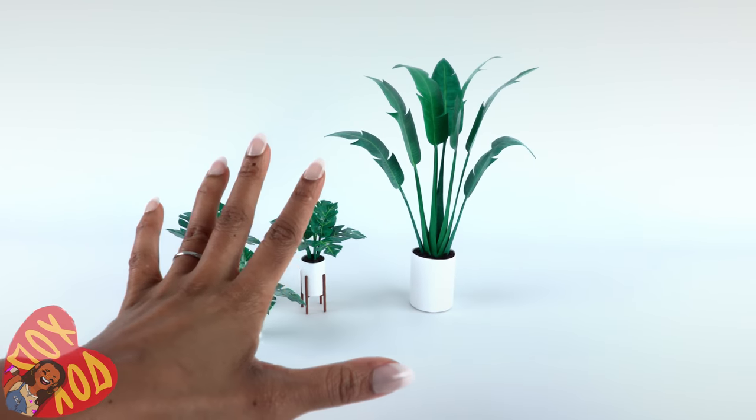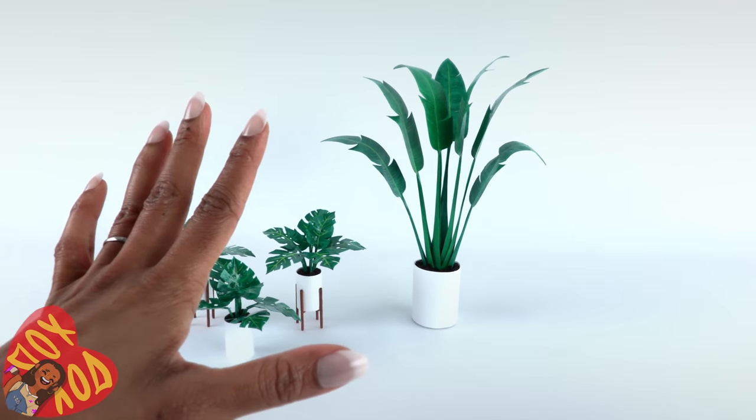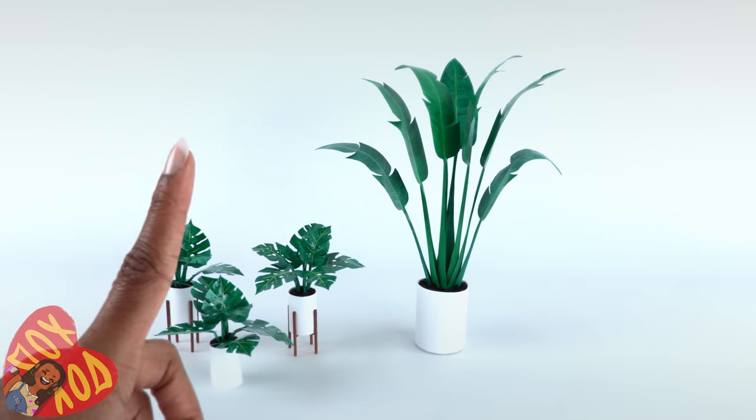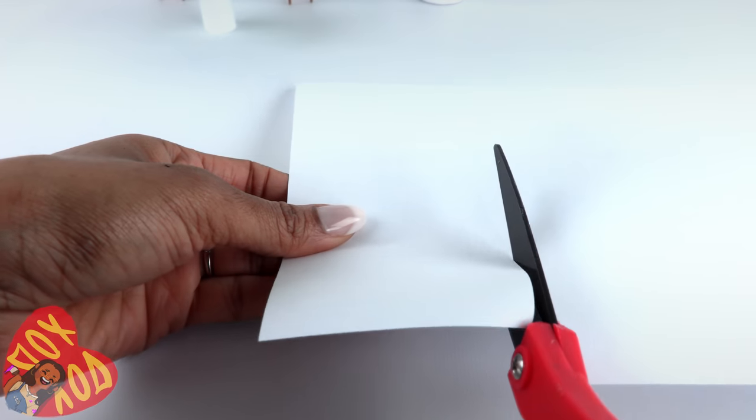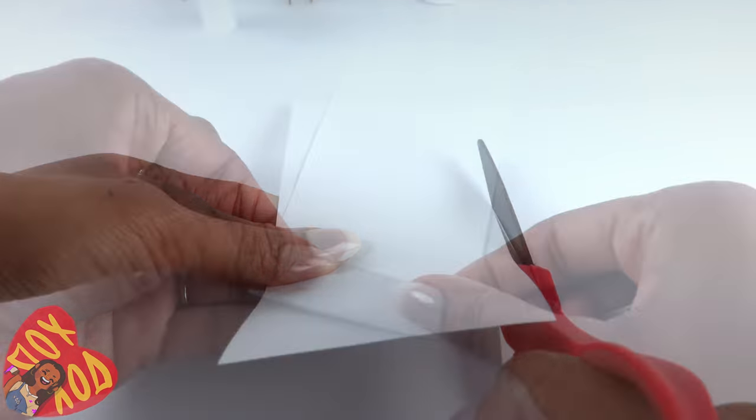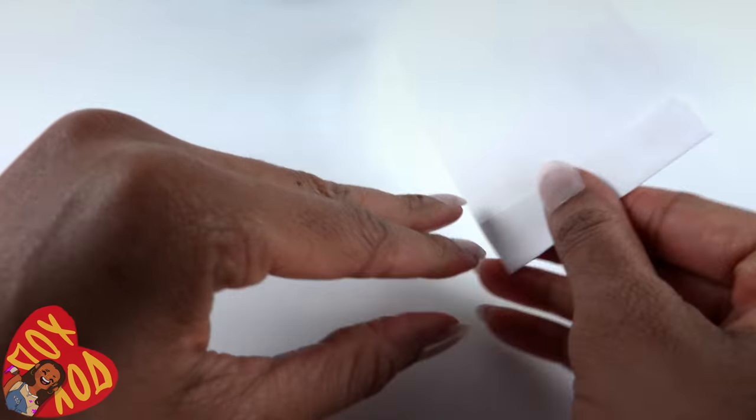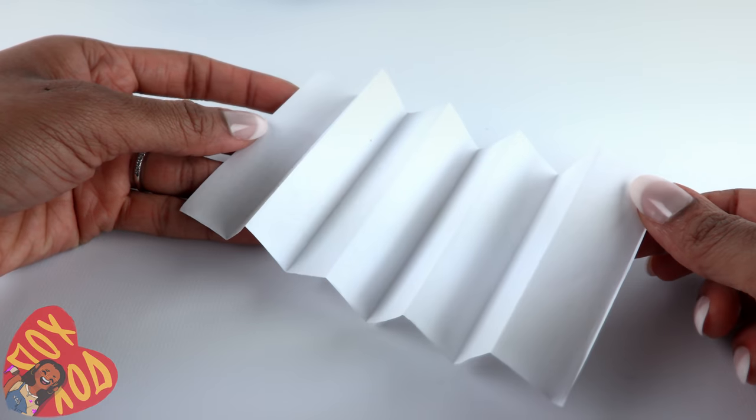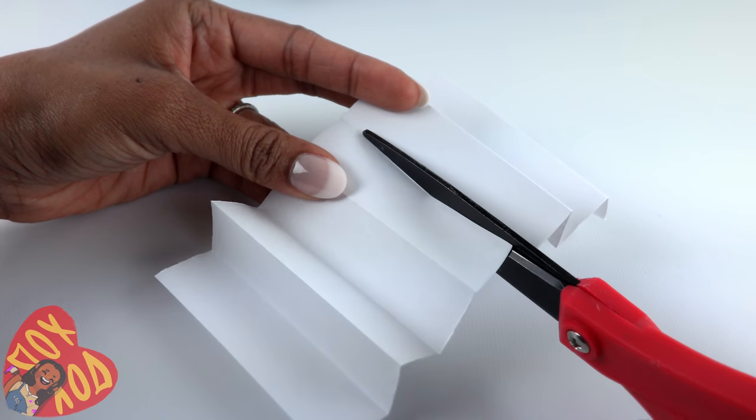Our last plant doesn't need any nail polish. In my opinion, it is the easiest, but it's also the most tedious. Take plain white paper. Cut it into about three inch strips. Fold the paper going back and forth, accordion style, all the way down. I'm gonna cut this in half. Make it flat.